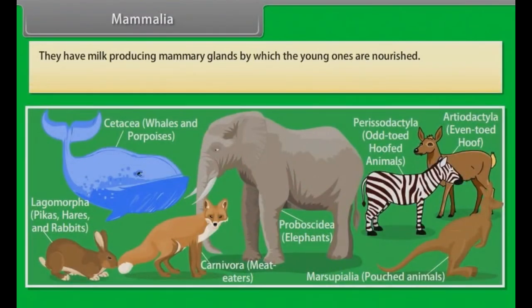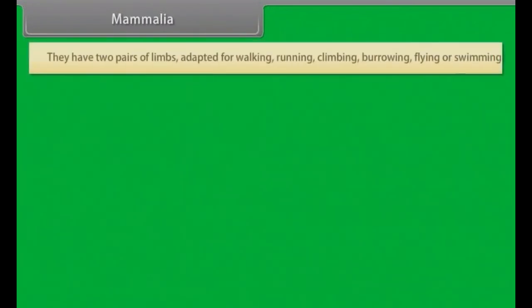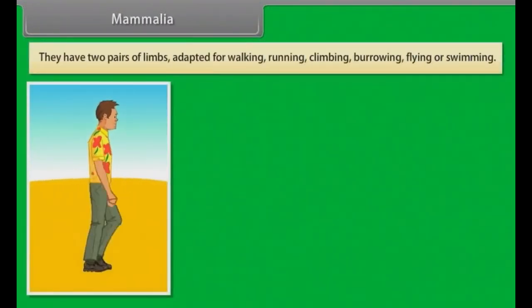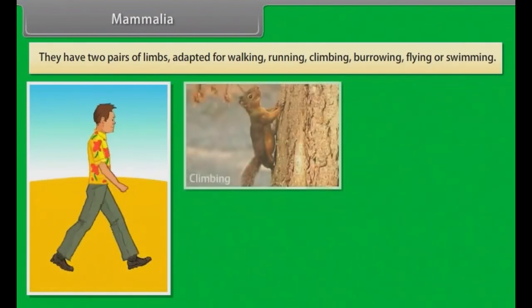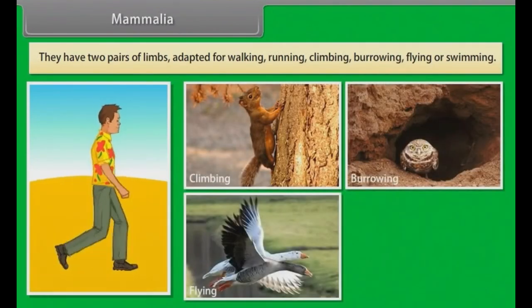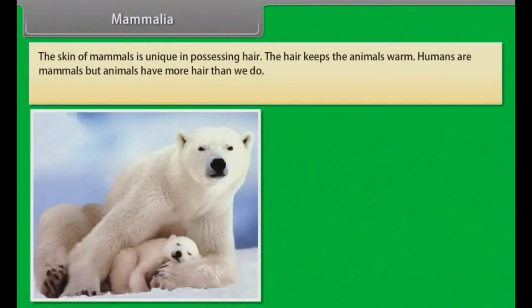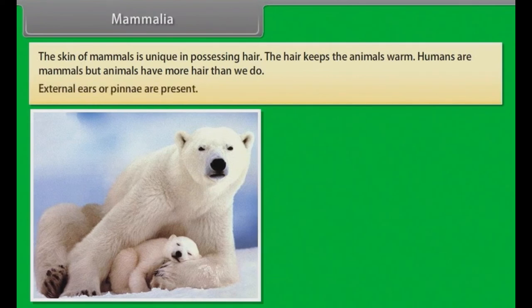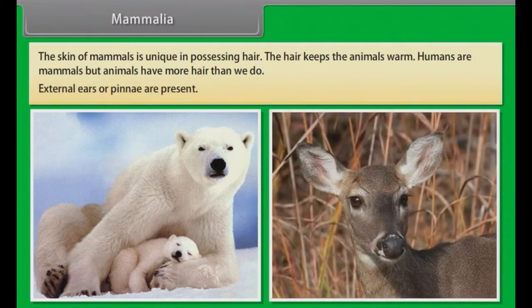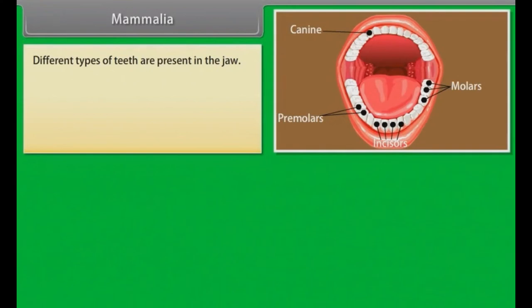Mammals have milk-producing mammary glands by which young ones are nourished. They are homeothermous, that is, warm-blooded. They have two pairs of limbs adapted for walking, running, climbing, burrowing, flying or swimming. The skin of mammals is unique in possessing hair, which keeps the animals warm. External ears or pinnae are present. Different types of teeth are present in the jaw.